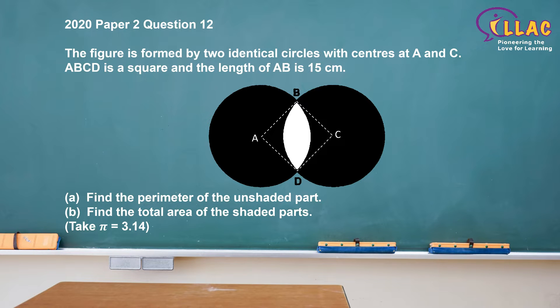The figure is formed by two identical circles with centers at A and C. ABCD is a square and the length of AB is 15cm. Find the perimeter of the unshaded part. Find the total area of the shaded parts. Take pi equals to 3.14.